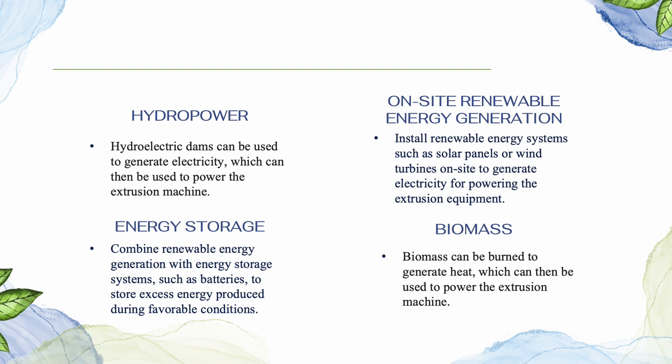Next, on-site renewable energy generation. By installing renewable energy systems such as solar panels or wind turbines on-site to generate electricity for powering the extrusion equipment, this allows for direct utilization of clean energy in the manufacturing process.